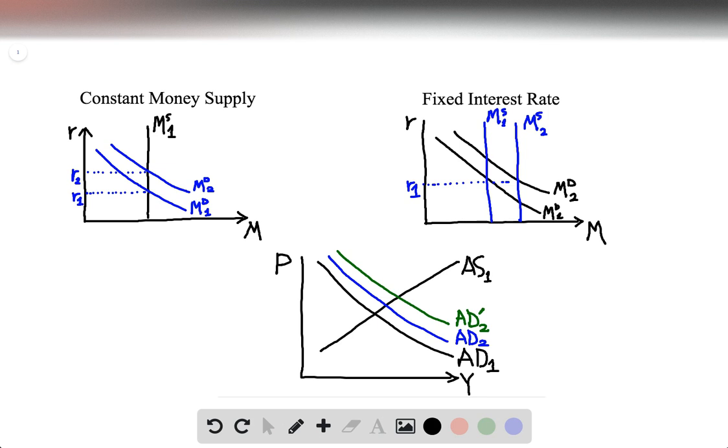As per usual with this type of question, we start by analyzing what's going on in the money market. So we make a simple supply and demand graph for money. On the x-axis, we have our quantity of money, M. On the y-axis, we have our interest rate, R.